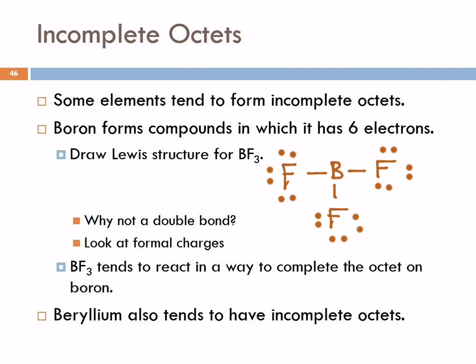What we observe is that boron trifluoride tends to react in a way that will complete the octet on boron, but this is the correct Lewis structure for boron trifluoride. Beryllium is another element that also tends to have incomplete octets. Beryllium is an alkaline earth metal — you might say shouldn't he be making ionic compounds? Yeah, he should, but sometimes he makes covalent compounds because those little guys violate the rules sometimes.